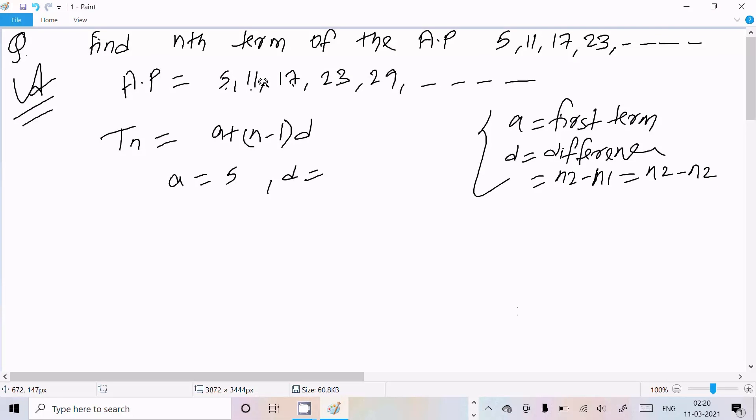n2, n3, n4. So n2 minus n1: 11 minus 5. The d value is now 6.